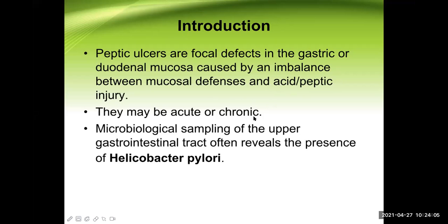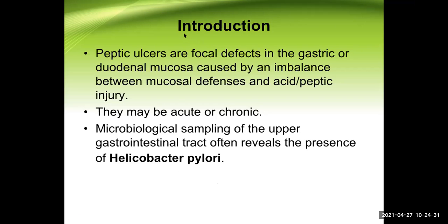Peptic ulcers may be acute or chronic, but usually peptic ulcer refers to the chronic type. Microbiological sampling of the upper GI tract often reveals Helicobacter pylori in peptic ulcer disease. H. pylori is one of the most common causes. 100% of duodenal ulcer cases are associated with H. pylori, and about 70–80% of gastric ulcer cases are associated with H. pylori infection.